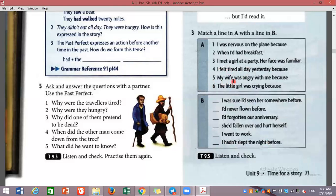Number five, my wife was angry with me because I'd forgotten our anniversary. I'd forgotten our anniversary. Number six, the little girl was crying because she had fallen over and hurt herself.